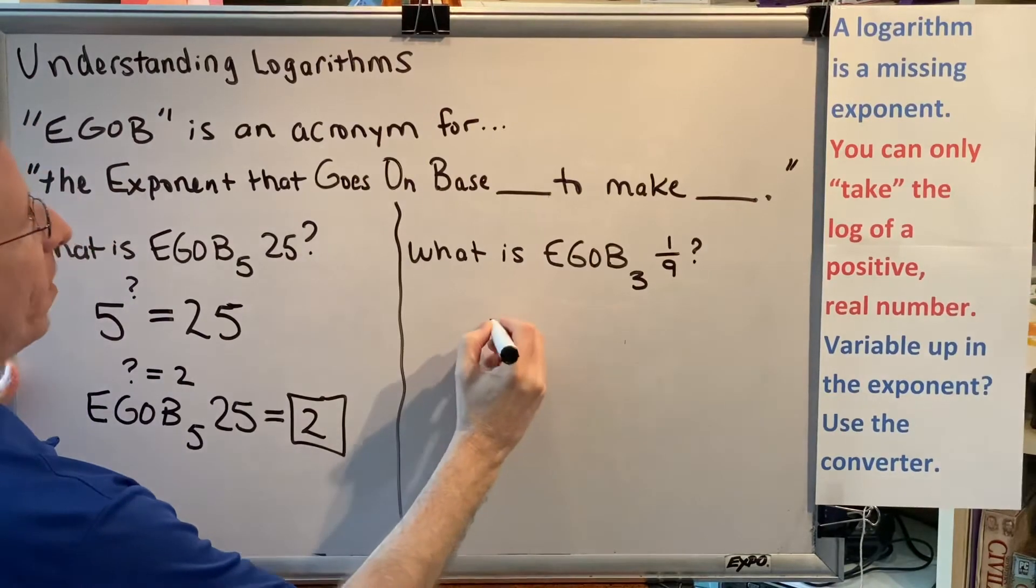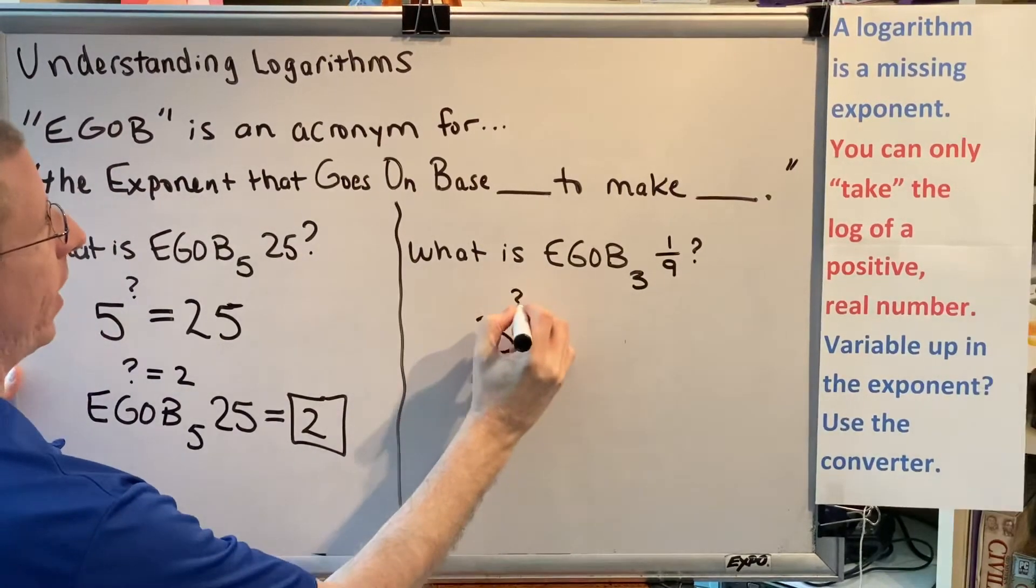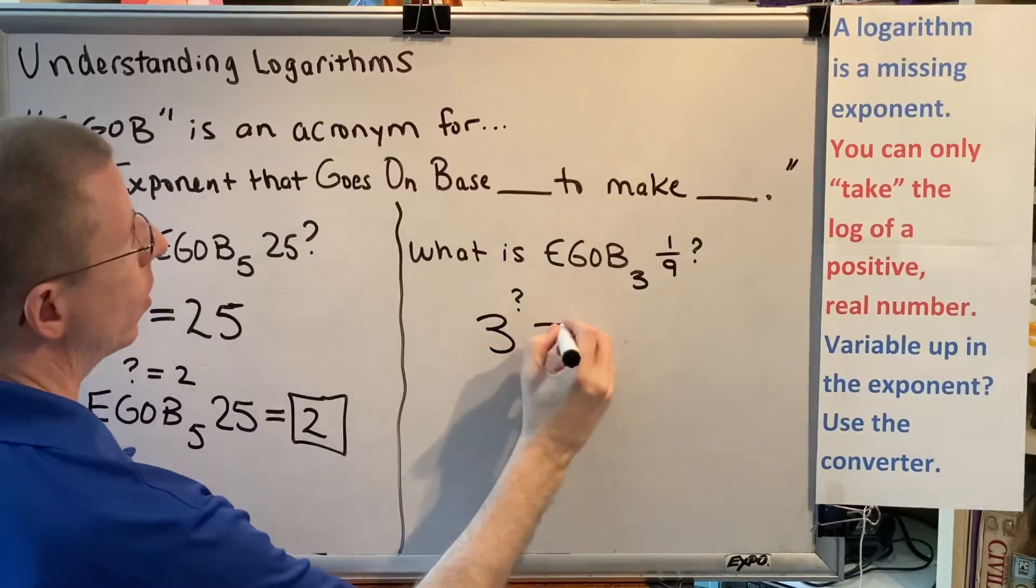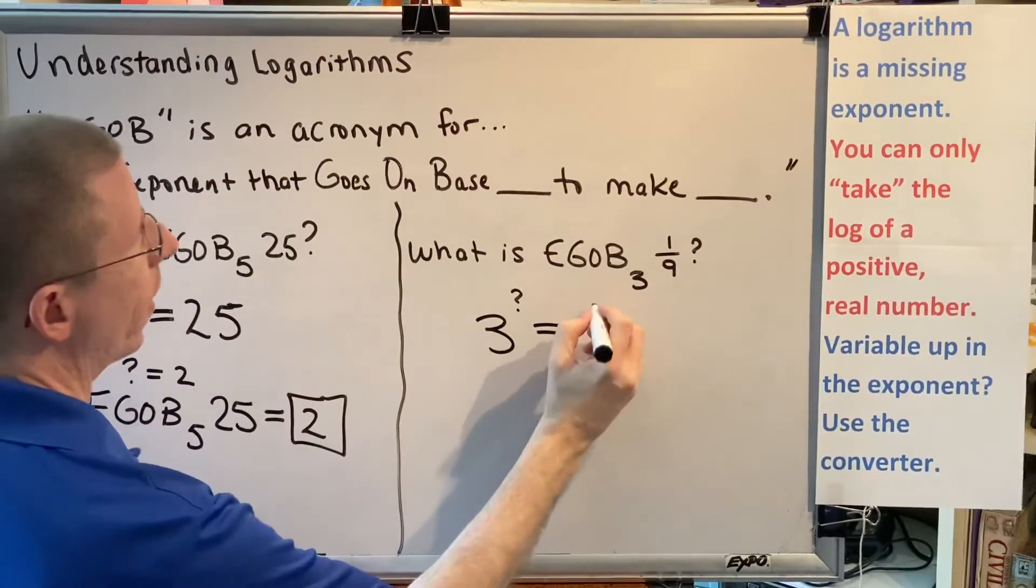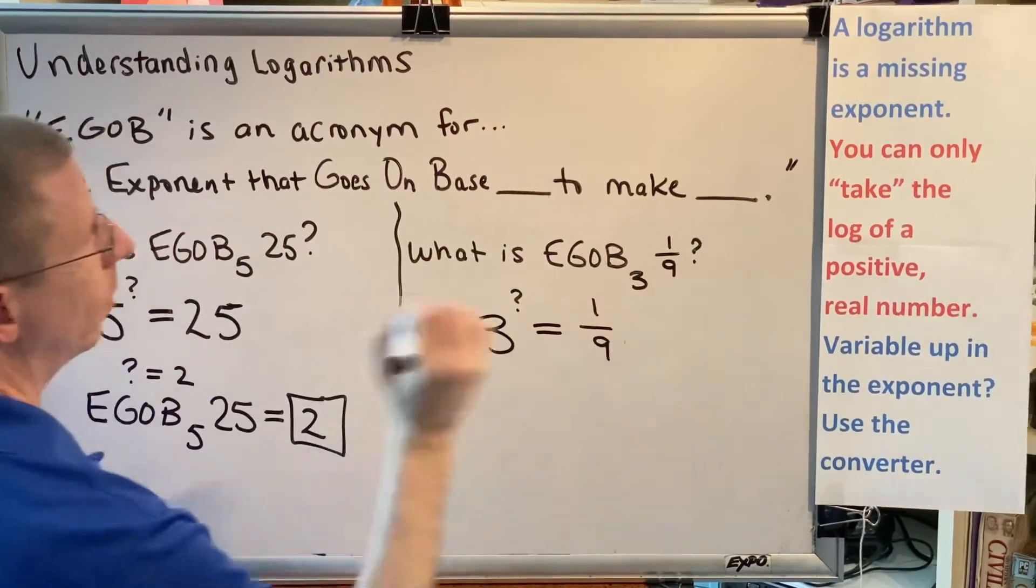Let's write it out symbolically. What is the exponent that goes on base 3, which would look like that, to make, which is equals, 1 ninth?